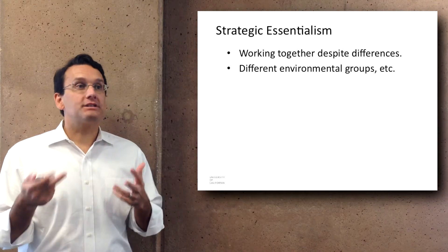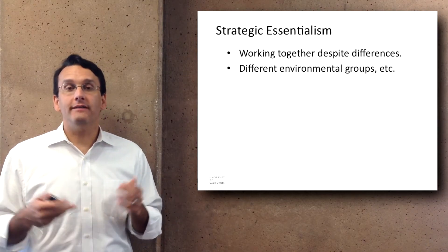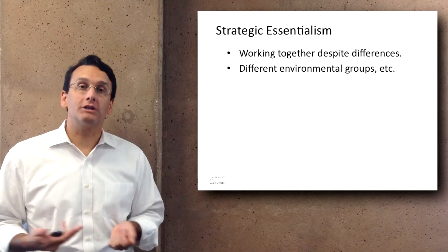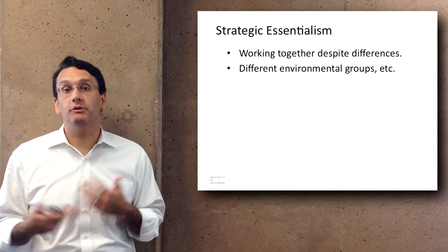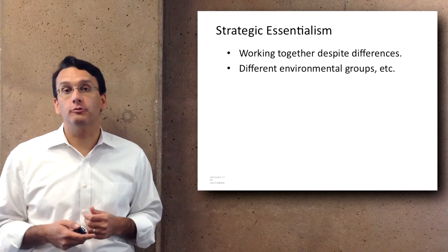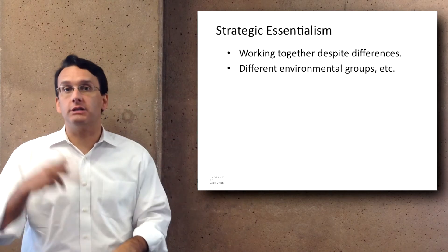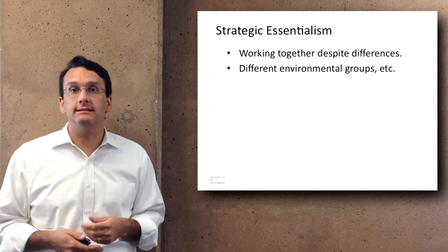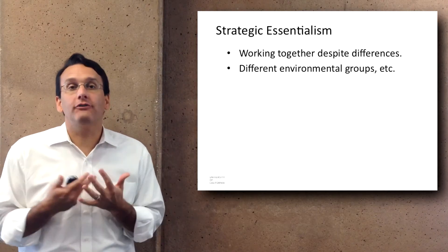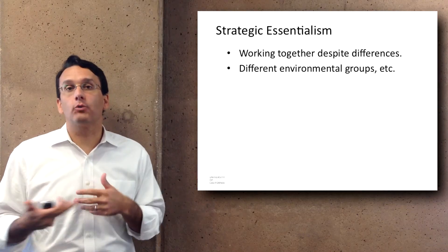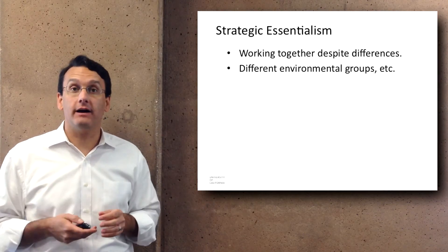This gets to a concept called strategic essentialism — the idea that several groups might be able to work together despite differences in how they define terms. This happens a lot with different environmental groups who might have subtly different approaches: one may think sustainability is just about humans, another may think it's about all different species. And yet they're after a similar goal, so they're able to work together despite some differences in how they define various terms.